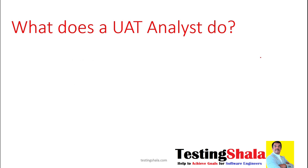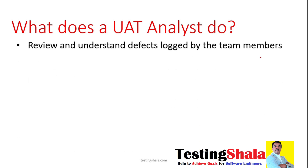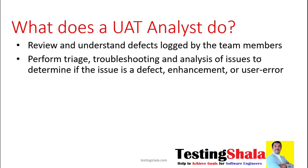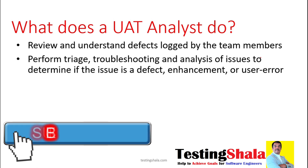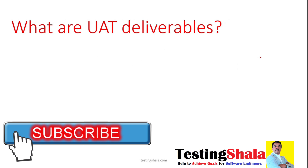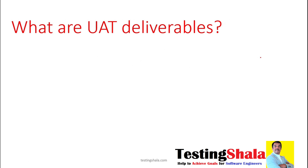What does a UAT analyst do? The main role of a UAT analyst is reviewing and understanding the defects logged by their team members. They review all the defects, perform triage meetings with different people, gather information, and do troubleshooting and analysis of various issues to understand whether the issue is really a defect, an enhancement, or a user error.